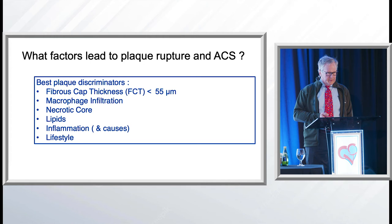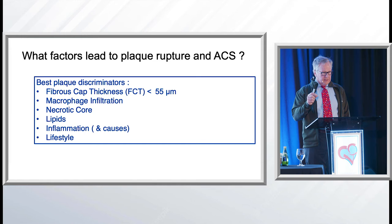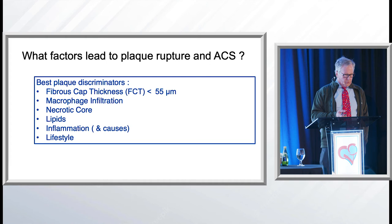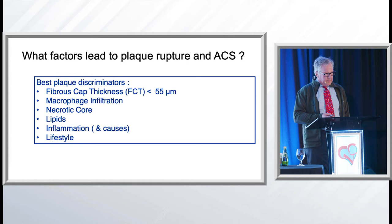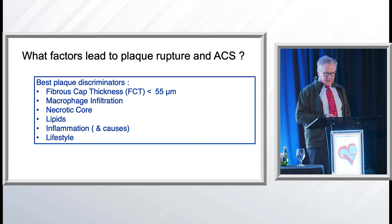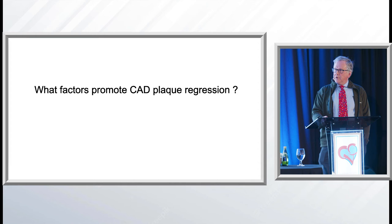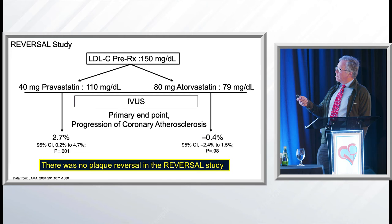What factors lead to all of this? At the individual plaque level: cap thickness less than 65 or 55 microns is more likely to rupture; macrophage infiltration, which we cannot measure; and necrotic core, which we can measure with CT. Then there are lipids, inflammation, and the causes of inflammation — which are primarily lifestyle. What factors promote CAD plaque regression? Studies have tried to answer this. One called the REVERSAL study came out over a decade ago — in it, there was no reversal.